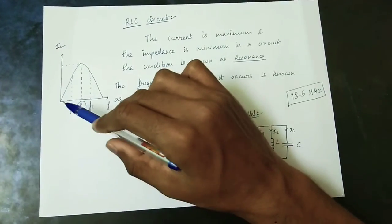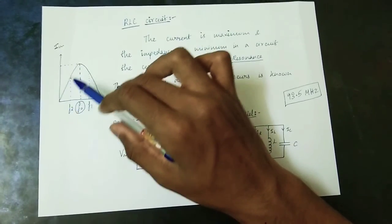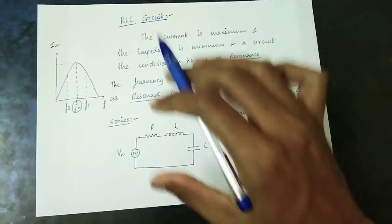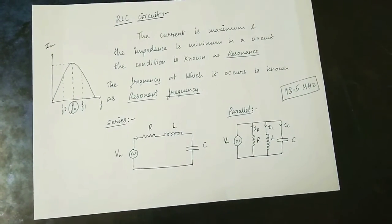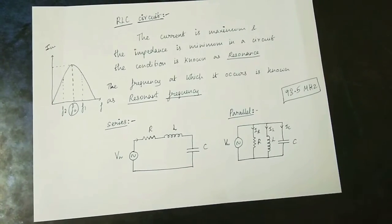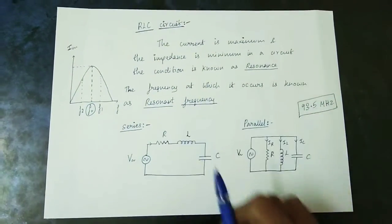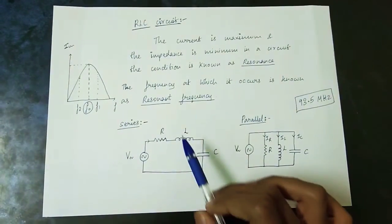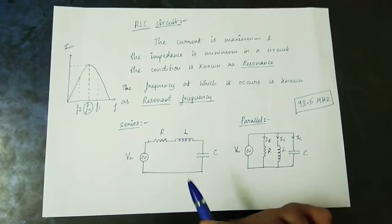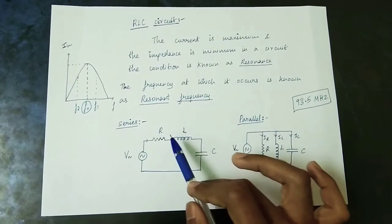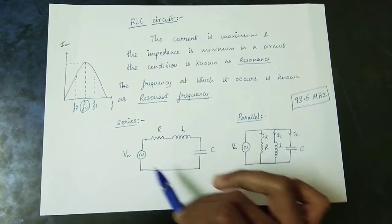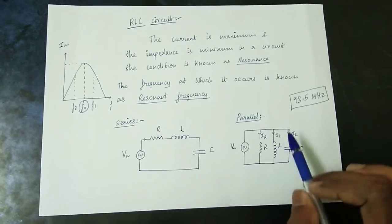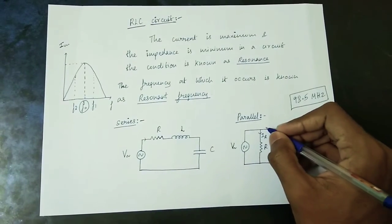If you plot current against variable frequency values, the current reaches a maximum point at F0 — the resonant frequency. In both series and parallel RLC, the resonance condition is the same: XL equals XC. In a parallel RLC circuit, IR, IL, and IC currents are separate. In the LC path, open circuit acts in the resonance condition — the LC path current circulates within the loop while R carries the supply current.